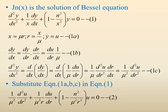Now we find d²y/dx², which equals d/dx of (dy/dx). Since dy/dx = (1/μ)(du/dr), differentiating with respect to x gives (1/μ)(d²u/dr²)(dr/dx). Substituting dr/dx = 1/μ gives d²y/dx² = (1/μ²)(d²u/dr²).